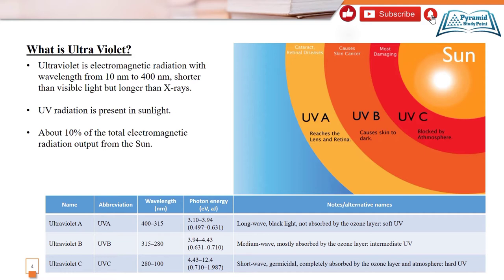As you can see in the table below: the wavelength from 400 to 315 nanometers is called UV-A, it is a long wave or black light, and the ozone layer does not absorb it — it is called soft UV. UV-B is 315 to 280 nanometers, called medium wave, and the ozone layer mostly absorbs it. UV-C has a wavelength of 280 to 180 nanometers, called short wave, and it is completely absorbed by the ozone layer and atmosphere — it is called hard UV.